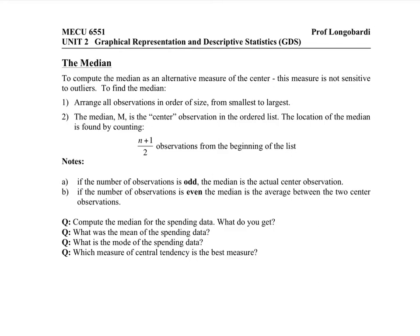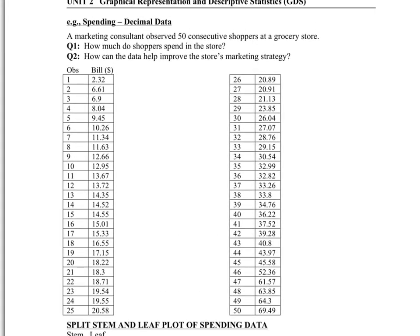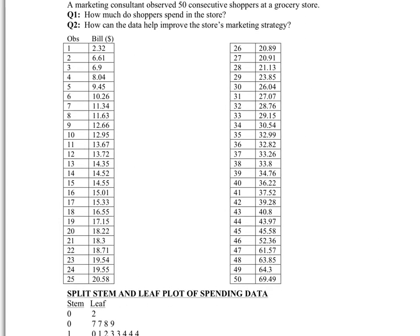Following the instruction on page 9, we're going to compute the median. And we're going to do this for the spending data. So if you recall, this was the spending data stem and leaf plot. It was formed by taking the observations in the grocery store, ranking them, putting them in numerical order.